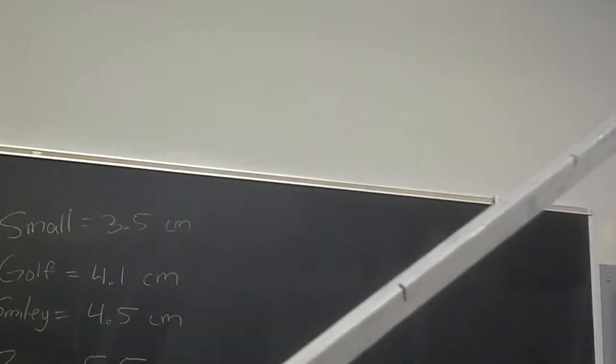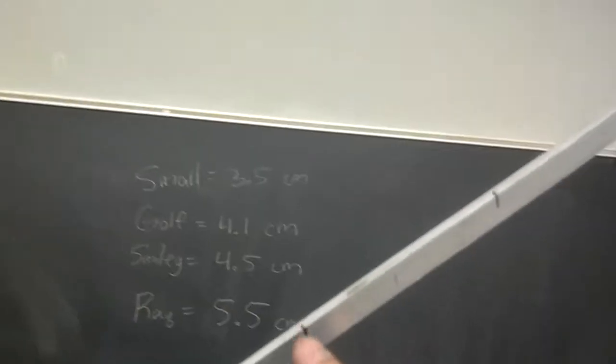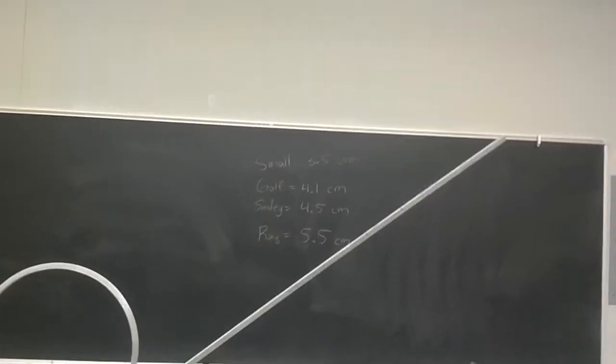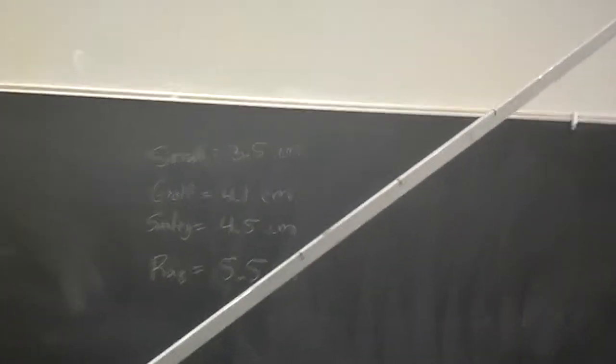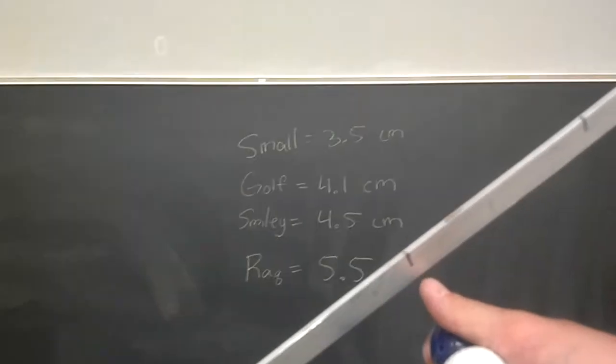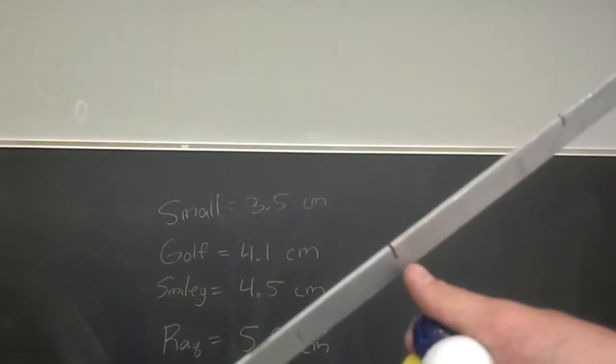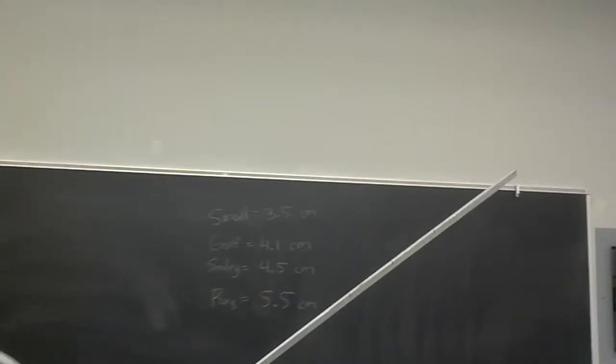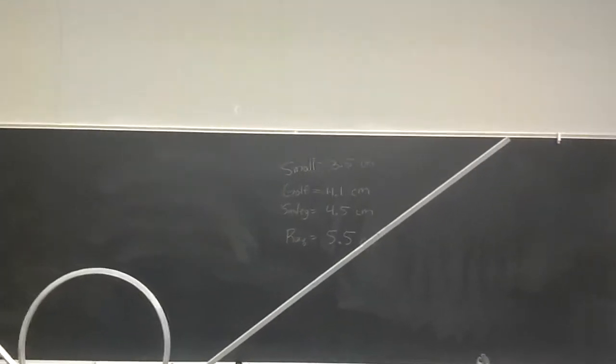On this track I have a couple heights marked. Right here is going to be about a third of the distance from the top of the loop to the top of the rail. This is a third of the distance in height, this is half of the height, and this is two-thirds of the height. We've got three different starting positions for these different balls.